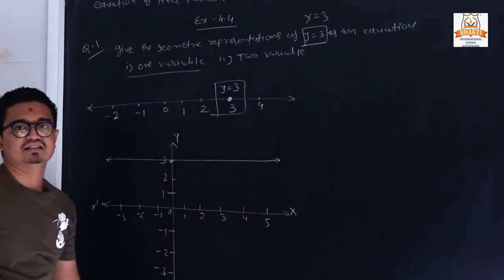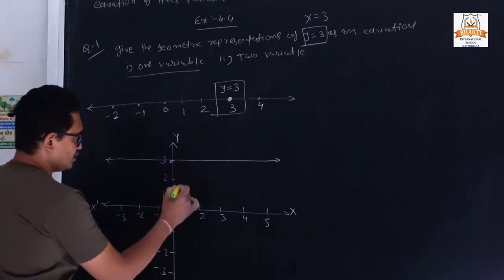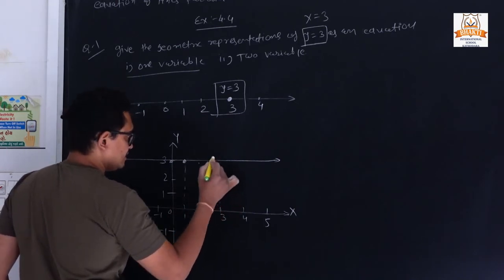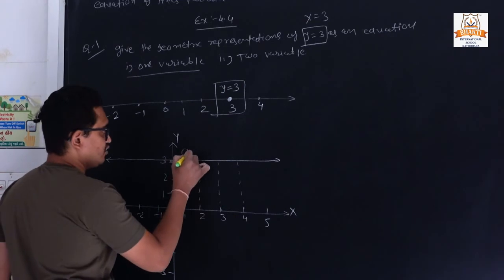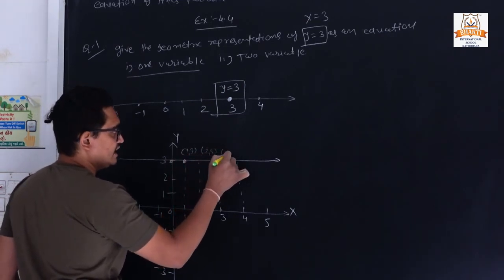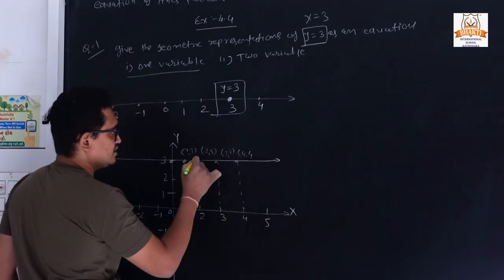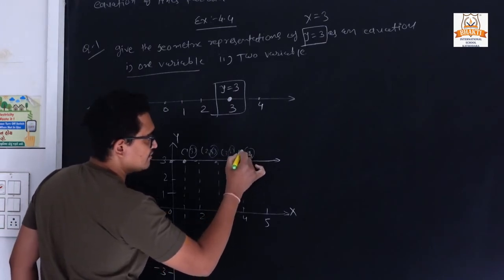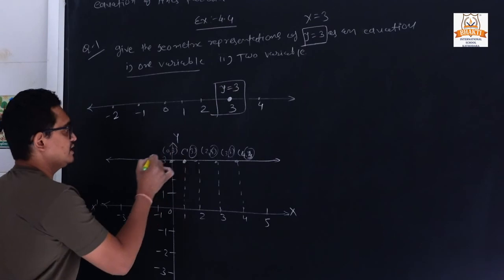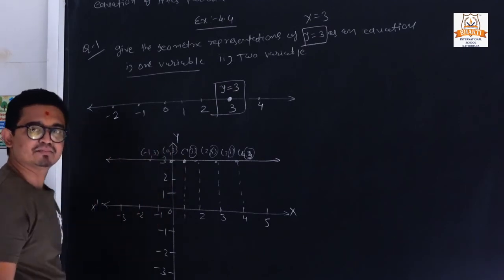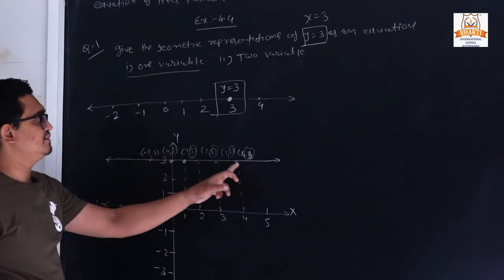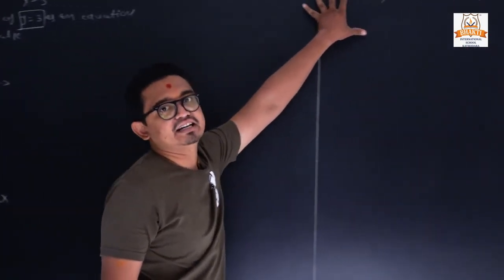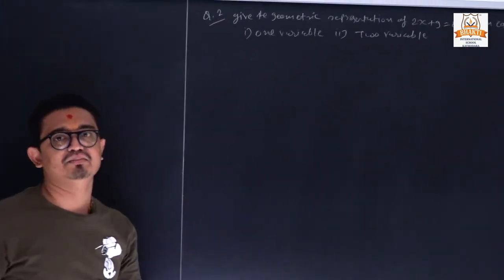In two variables, y = 3 represents a horizontal line parallel to the x-axis. Points on this line include (1, 3), (2, 3), (3, 3), (0, 3), (−1, 3), etc. — the y-value is always 3 but x changes. If x = 3 were given instead, the line would be vertical and parallel to the y-axis.